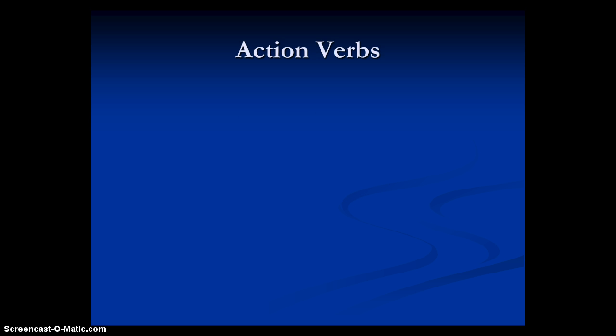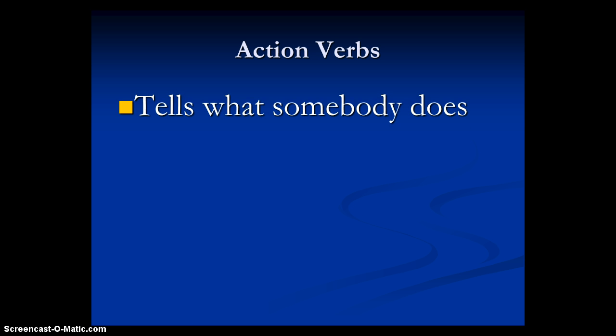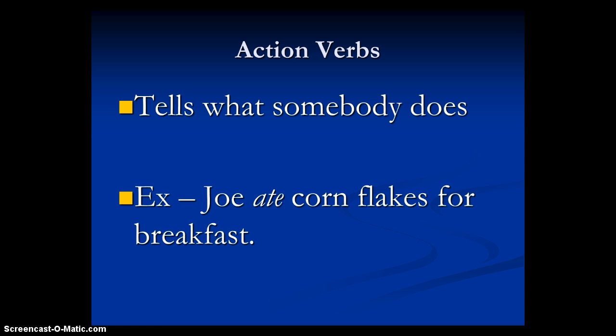First we have action verbs. The definition basically is: an action verb tells what somebody's doing. Are they jumping? Are they running? Are they flying? Whatever it is, that's the verb. Our example, very simply: Joe ate cornflakes for breakfast, and the italicized word 'ate' is what Joe did.